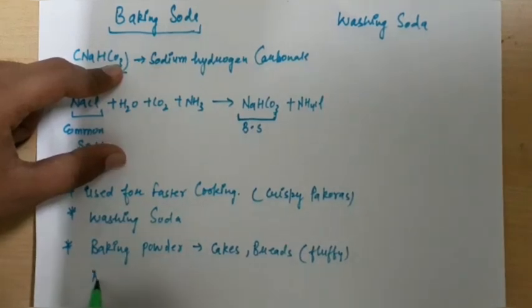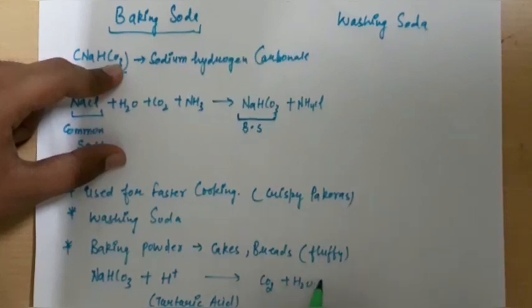Actually when baking soda that is NaHCO3 combines with tartaric acid, then it forms CO2 plus H2O plus salt.